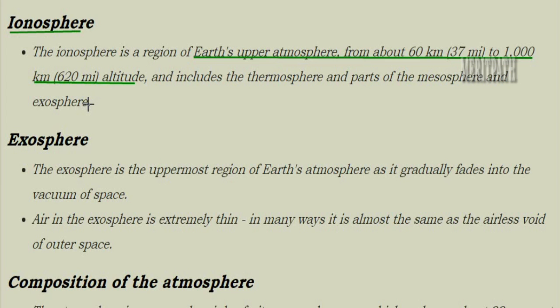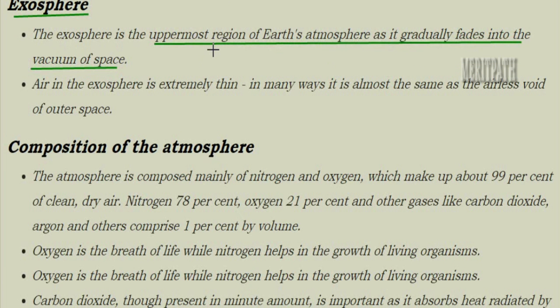Next is the exosphere. The exosphere is the uppermost region of the earth's atmosphere and it fades into the vacuum of space — it goes and mixes up with space. It is very high above the surface of the earth and the air here is extremely thin; in many ways it is almost airless. So it is a very thin layer of air.